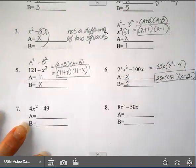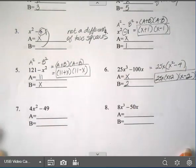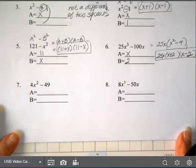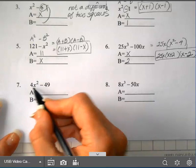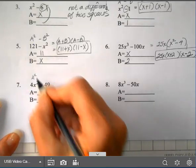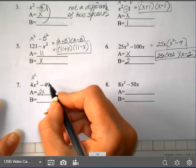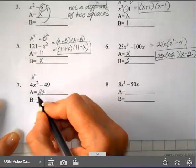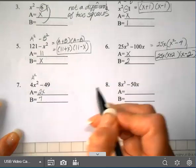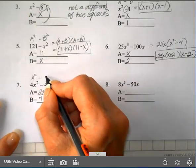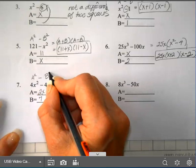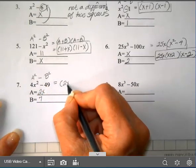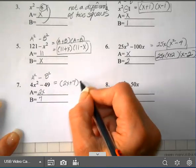For number 7, do they have a GCF? No. Is the first term a square? It is — that's 2x. Is the last term a square? Yes, square root of 49 is 7. Is there a minus between them? There is. So this is in the pattern A squared minus B squared, and it factors into (2x + 7)(2x − 7).